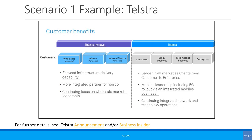In case you were wondering, NBN Co Ltd is an Australian government-owned corporation tasked to design, build and operate Australia's national broadband network, NBN, as a monopoly wholesale broadband provider. NBN provides broadband access predominantly to retail service providers, RSPs. These businesses then sell access to end users, both residential and business customers, to access the internet.